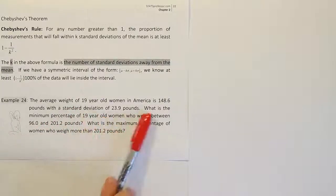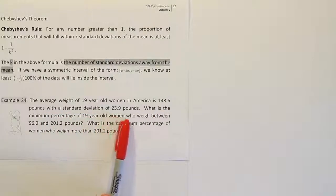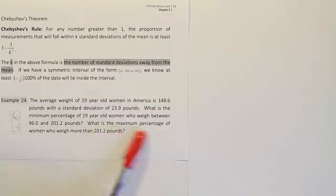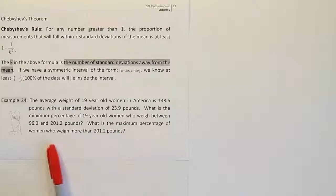The average weight of 19-year-old women in America is 148.6 pounds with a standard deviation of 23.9 pounds. What is the minimum percentage of 19-year-old women who weigh between 96 and 201.2 pounds? What is the maximum percentage of women who weigh more than 201.2 pounds?